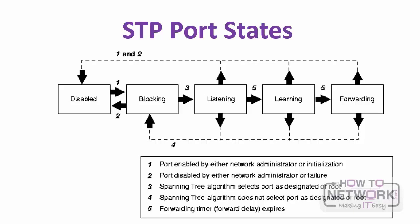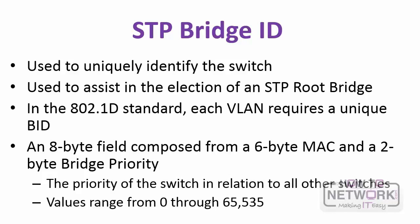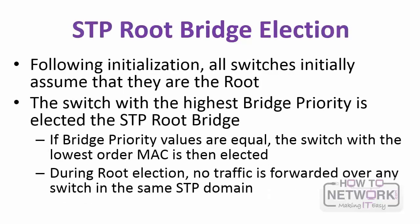Spanning tree uses the bridge ID to uniquely identify each switch and assist in the election of a spanning tree root bridge. In the 802.1d standard, each VLAN requires a unique bridge ID. Following initialization, all switches initially assume they are root, but the switch with the highest bridge priority is elected the spanning tree root bridge. All things being equal — with default settings — the root bridge is chosen by the lowest MAC address. During root election, no traffic is forwarded until things are stabilized and a loop-free topology exists.